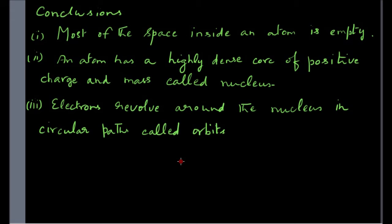The credit for the discovery of the nucleus is given to Rutherford, but he could not offer a very good explanation about the arrangement of electrons around the nucleus. His work was continued by Niels Bohr. The arrangement of electrons in an atom around the nucleus is called electronic configuration, which we will take up in detail in a later chapter.